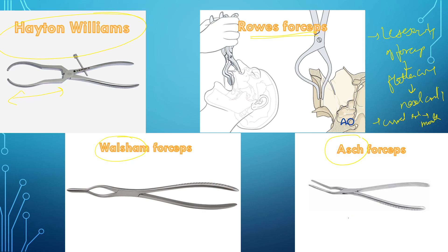Both Volsellum and Ash forceps are used for nasal bone reduction after fracture via closed reduction. In Volsellum forceps the beak is shorter, whereas in Ash forceps it is a longer beak. These are the various types of forceps used in these procedures.